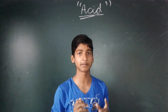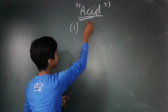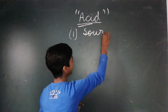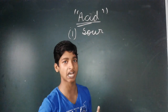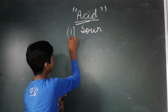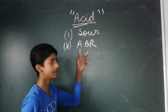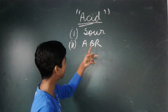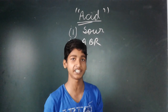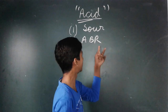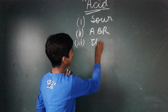Now we will discuss the properties of acid. The first property is that acids are sour in taste — if you taste acid, it will give a sour taste. The second property is that acid turns blue litmus to red. If you drop blue litmus solution into acid, it will change color to red.